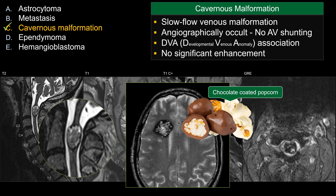Sometimes you can see an association with a developmental venous anomaly (DVA). That's useful if you see a small lesion with susceptibility artifact that doesn't have the classic appearance of a T2-bright center because it's too small. But if you see that lesion with an adjacent DVA, one differential to consider is a small cavernous malformation with adjacent DVA, in addition to prior microhemorrhage or a lesion with calcification. This lesion does not enhance.